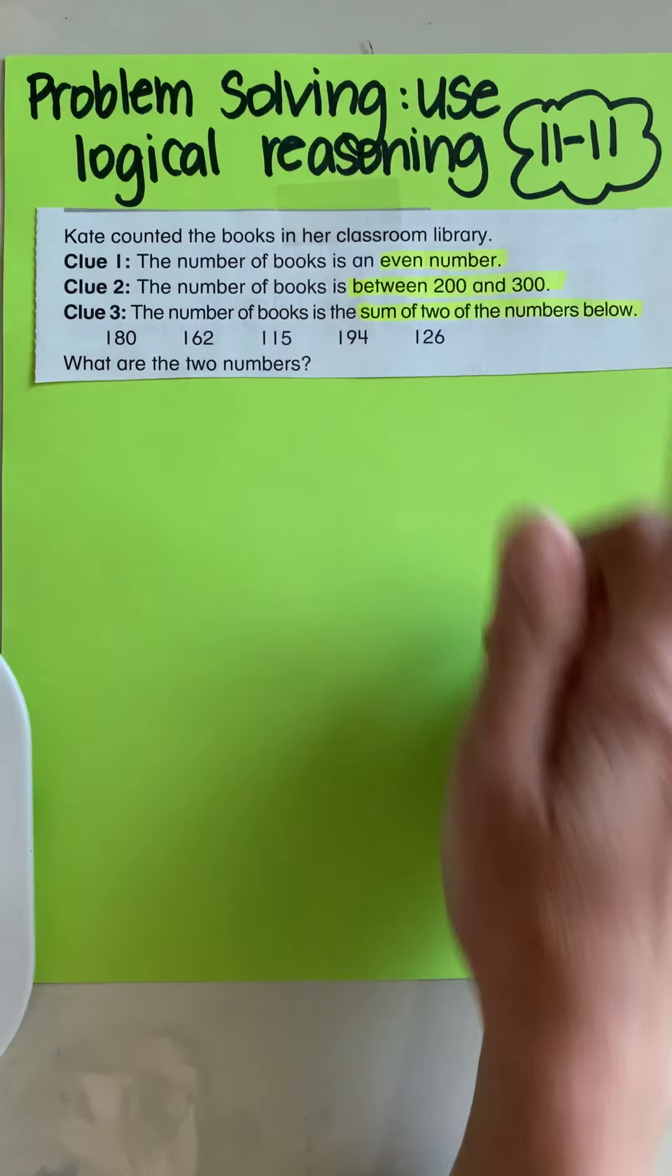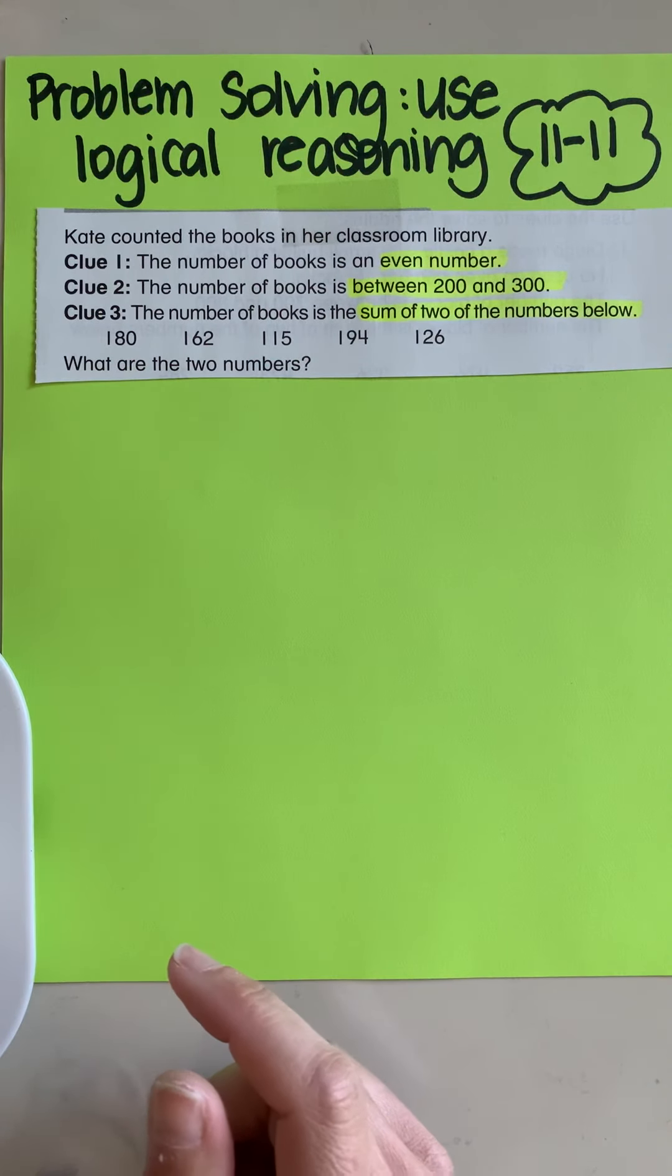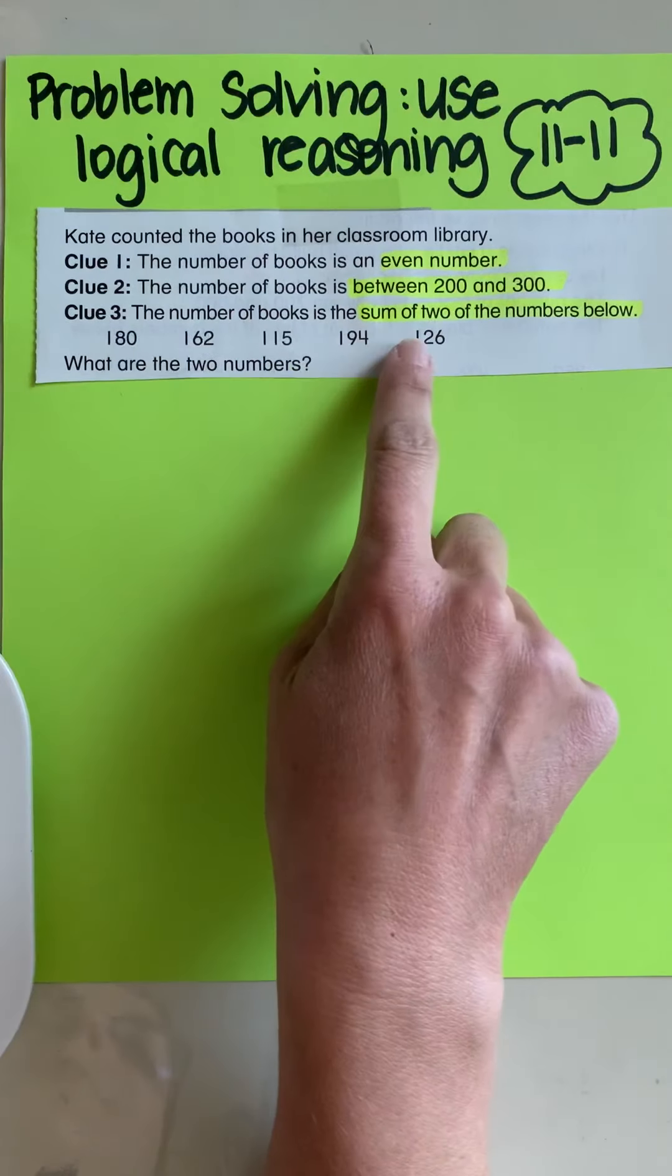So it's an even number. That means it needs to end in a zero, two, four, six, or eight. The number of books is between 200 and 300. And the sum of the two numbers, the number of books is the sum of two of these numbers below.